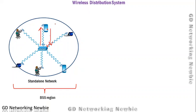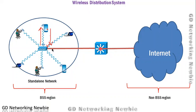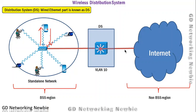Now if one or all of the nodes want to get connected with the internet or some other network, luckily this access point also has a wired link. So in addition to facilitating wireless nodes, this access point also has wired characteristics — we can connect a cable to it. So this can be part of the wired network as well.